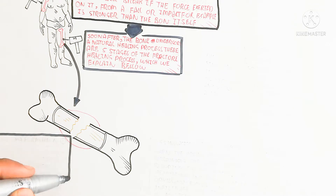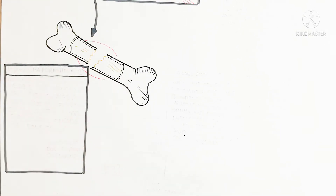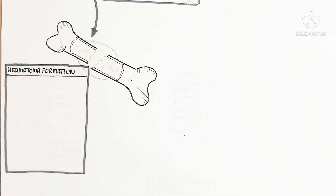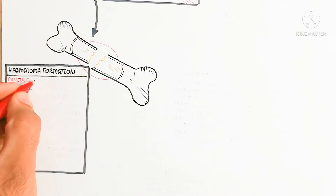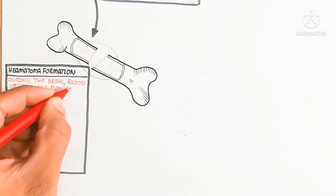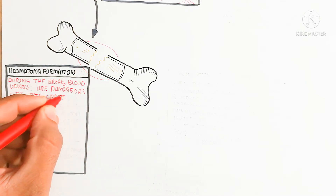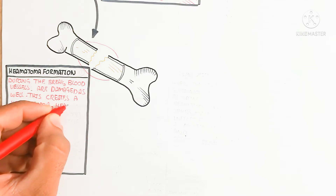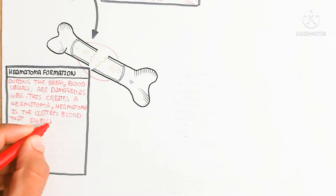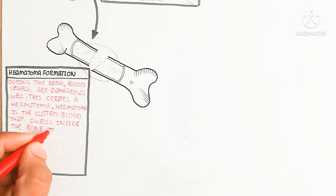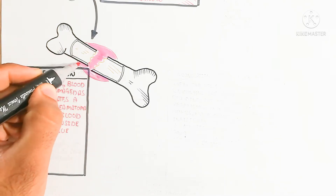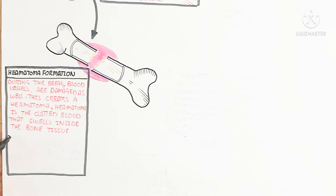The first stage after the bone breaks is hematoma formation. The hematoma means the clotting of blood — when the bone breaks, blood vessels are damaged, creating a hematoma, which is clotted blood that swells inside the bone tissue. The blood clot forms due to angiogenolysis, meaning the breakdown of the blood vessels.